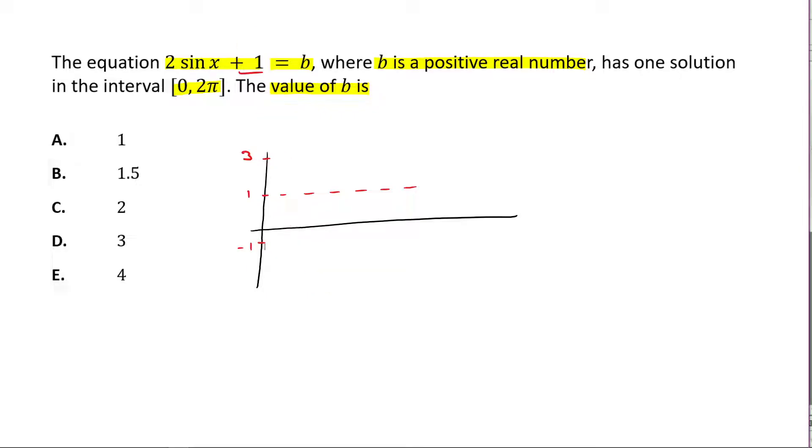So that means my graph looks something like this. It's going up, it's going down, it's going up again. That's what it looks like. That is 2π there.